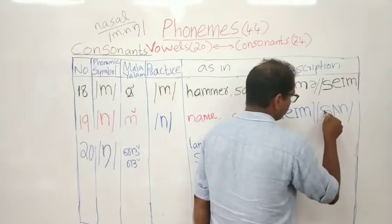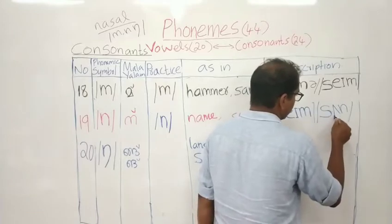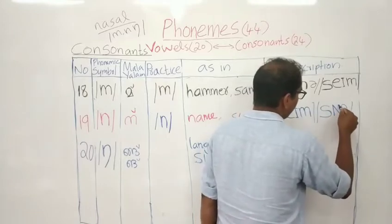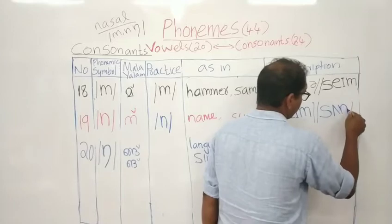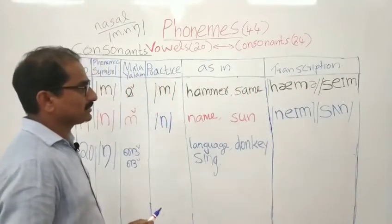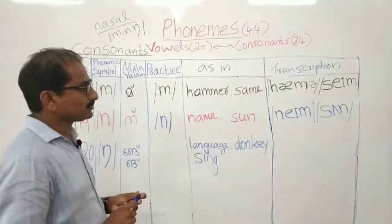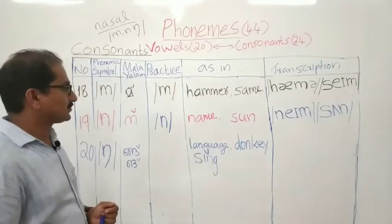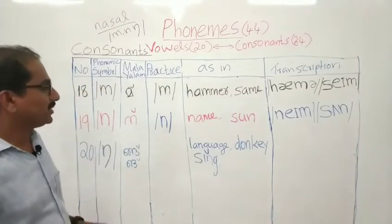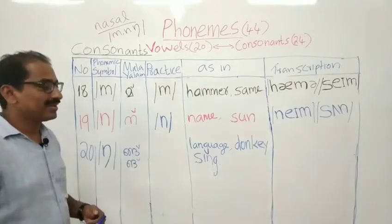Look at here. S — this S sound. Then A, vowel A. Then N. 'Sun'. This had to be written in red color, but I have written it in blue. Does it matter?